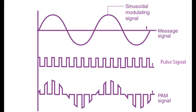Hello viewers, today we are going to perform the experiment of pulse amplitude modulation and demodulation. This process is used in digital communication systems. Digital communication systems are widely used nowadays due to their better quality, noise immunity, and simplicity of designing. In this process we can modulate the amplitude of a carrier pulse according to the amplitude of the modulating message signal.